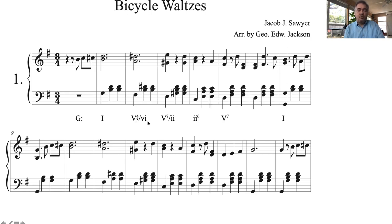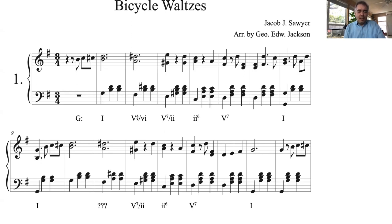So how does it work? It doesn't go directly to VI, but it tonicizes E and the next chord is an E chord, and this is how it works. So as we said earlier, a secondary dominant can tonicize the diatonic chord in that key, or it can tonicize another secondary dominant that is found on that scale degree being tonicized.